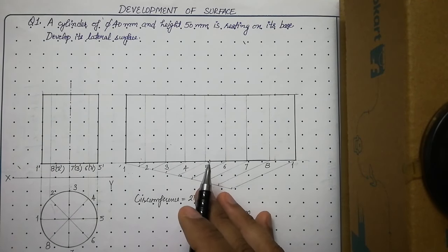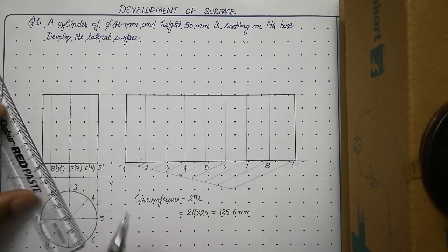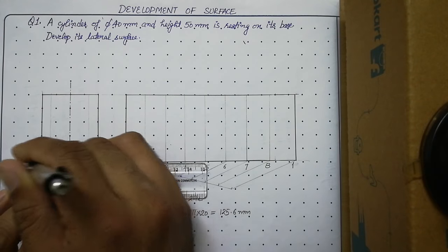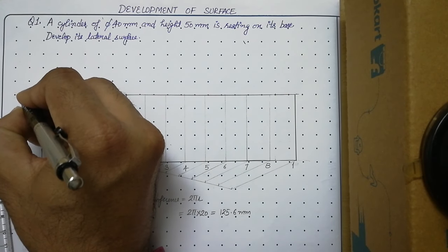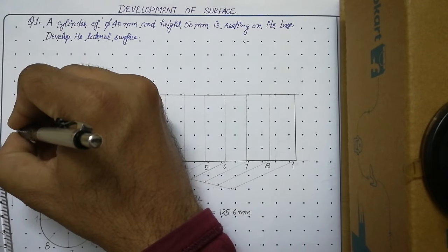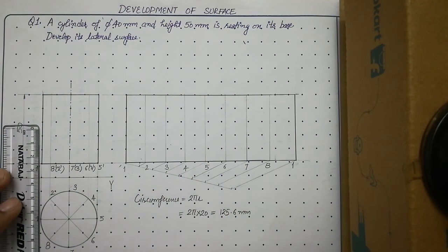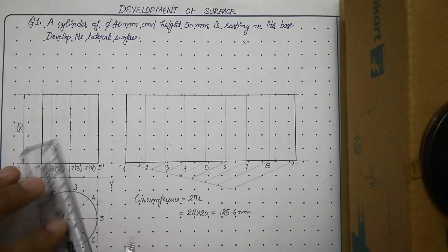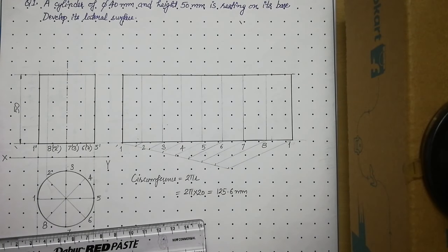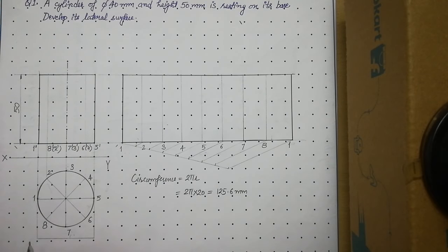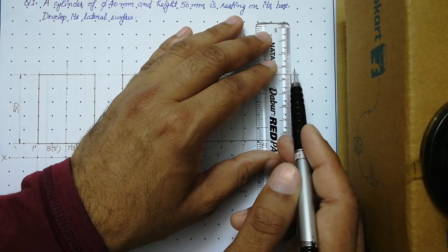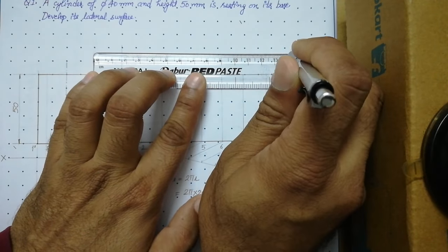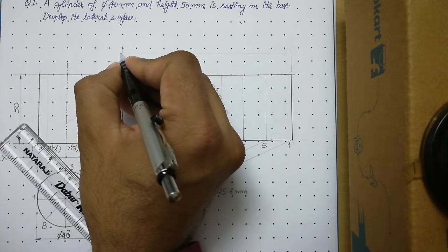Now place dimensions. First, place the height of the front view, which is 50 mm. Use the aligned system or unidirectional external system. Then place the diameter of the cylinder on the top view — it will be φ40. Then place the length of the development sheet, which equals the circumference we calculated: 125.6 mm.